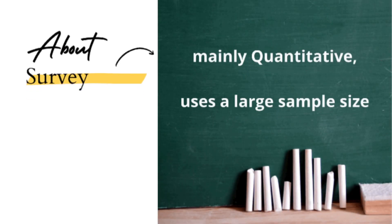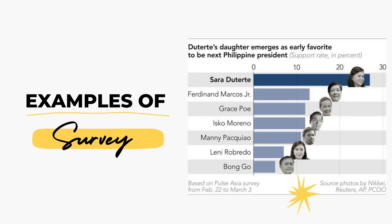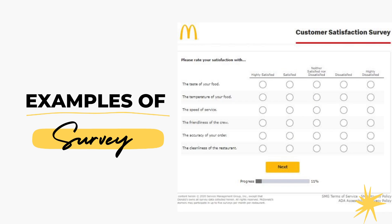Let's start with survey. It is mainly quantitative for it uses a large sample size. It is intended to acquire information concerning predominance, distribution, and interrelation of variables. One example is a survey on the favored presidential candidate for 2022, looking at the predominant candidate a population favors. Another example is a customer satisfaction survey, wherein researchers look into participants' perception of a certain product or service.